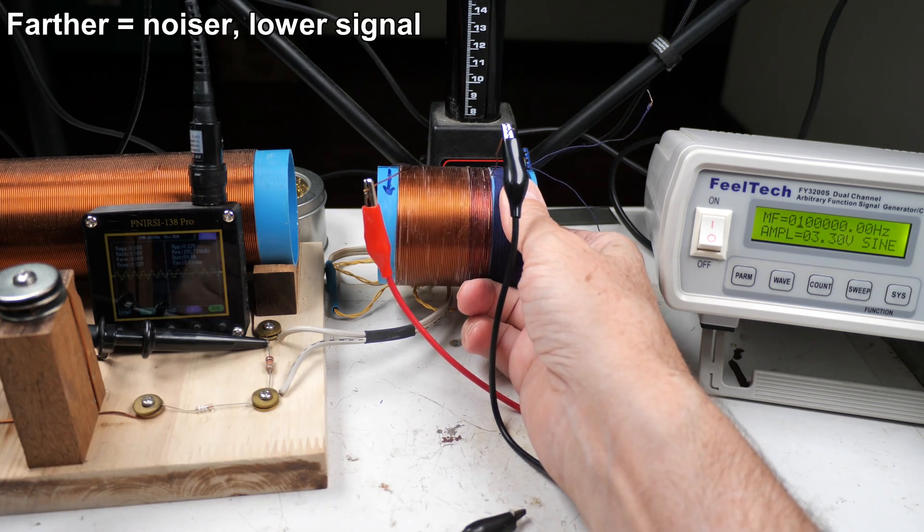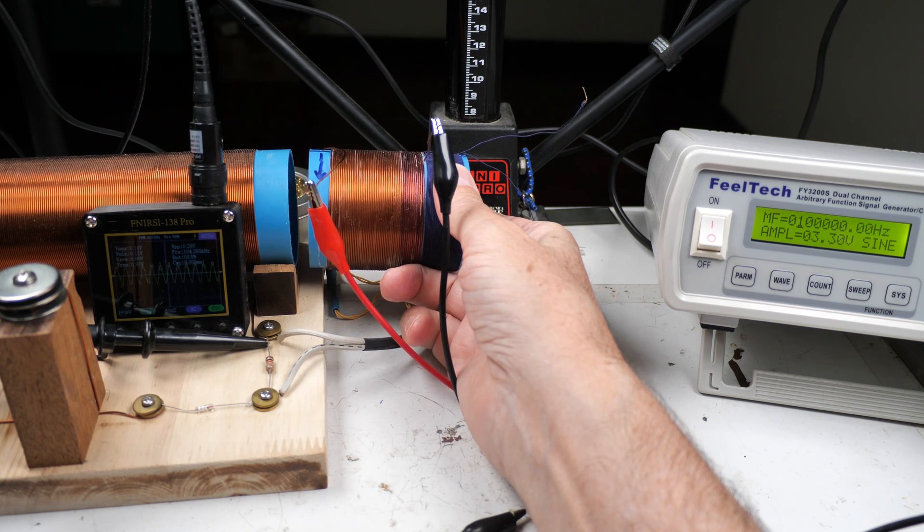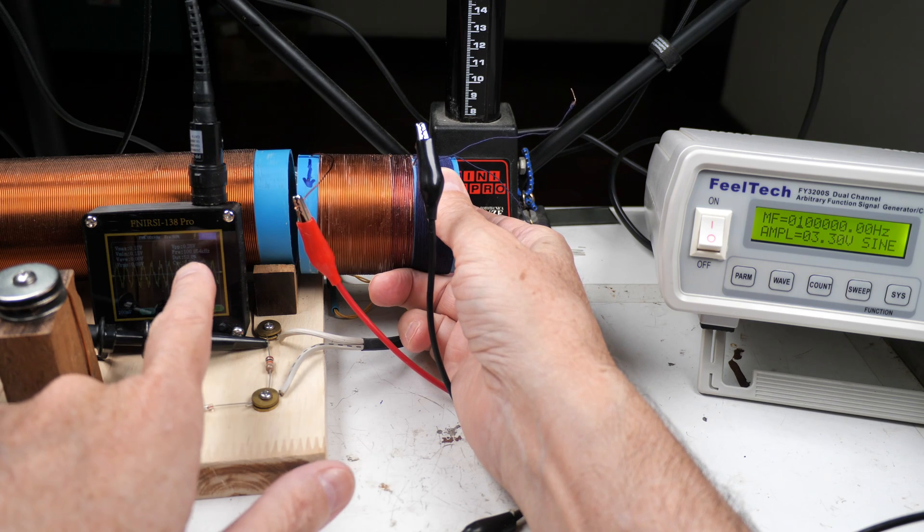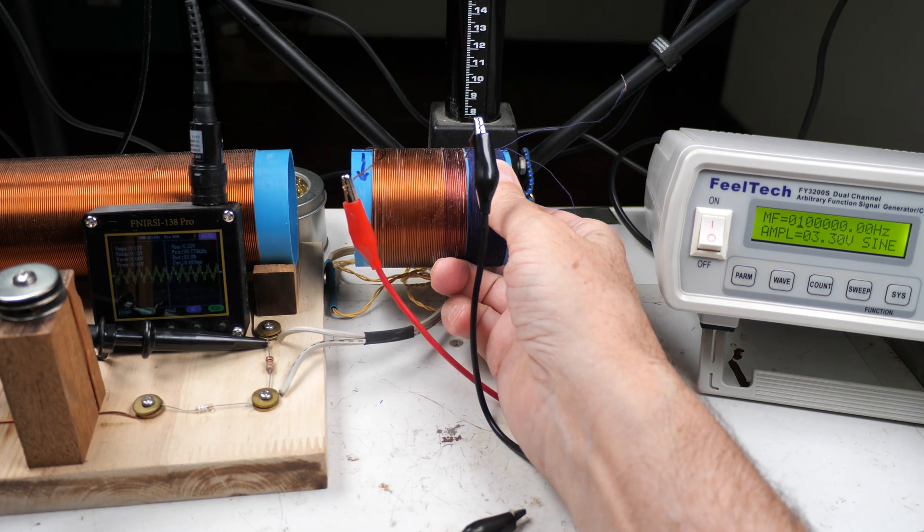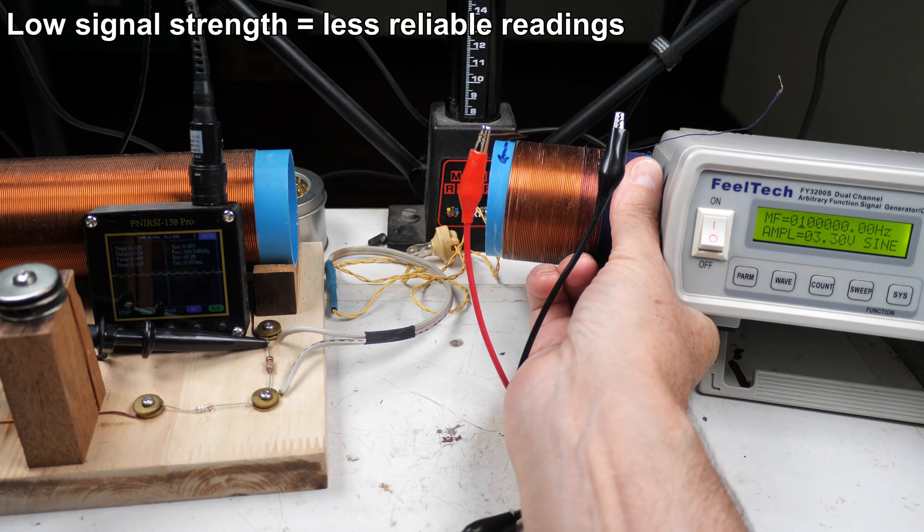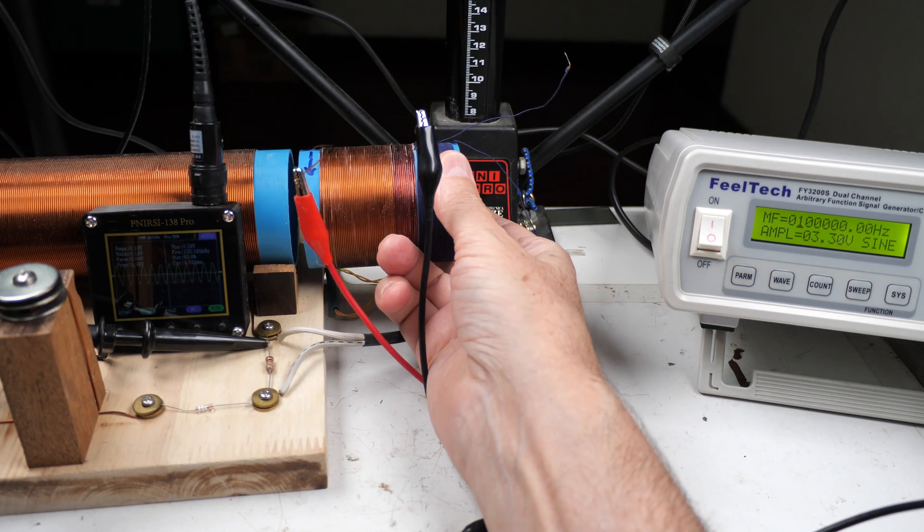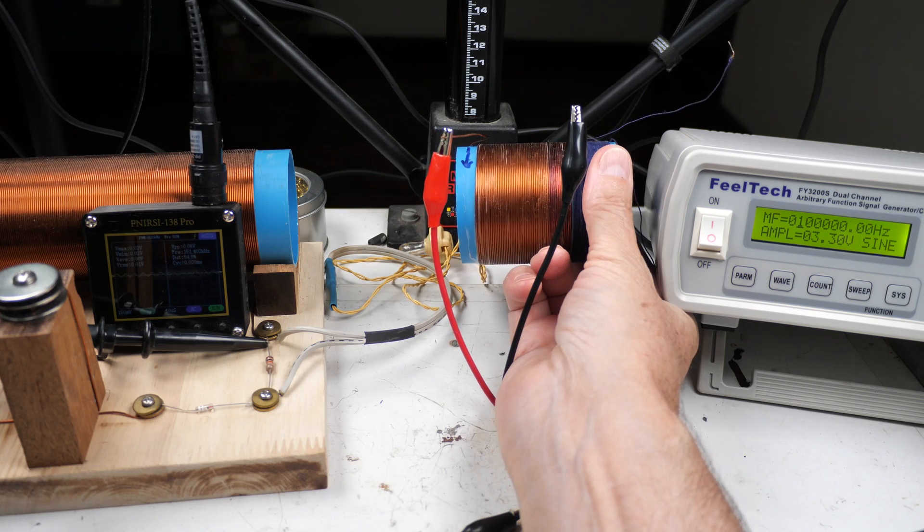You can see when we move it away, it'll get noisier and the scope will no longer be able to accurately measure the frequency. As we get it in here, it's pretty close, like 107 or 100. Of course, as we move it away more and more, the signal becomes noise. So this is more tightly coupled and this is less tightly coupled.